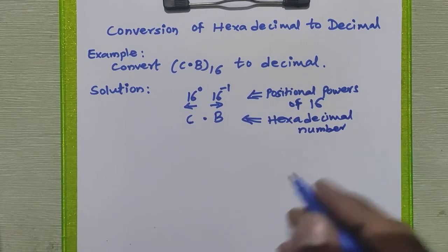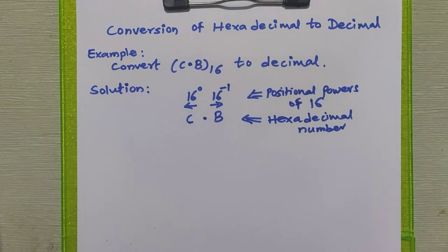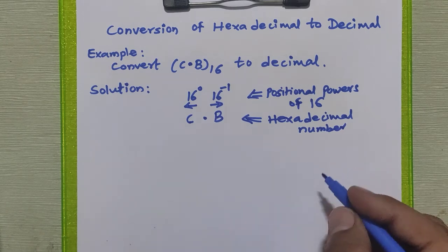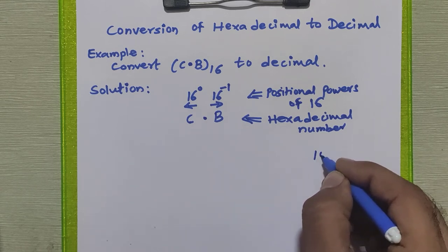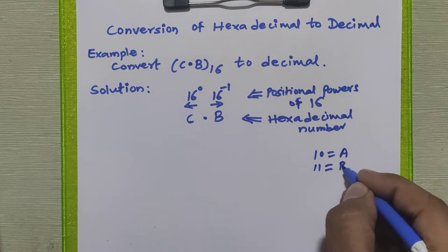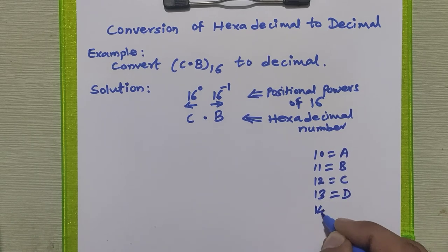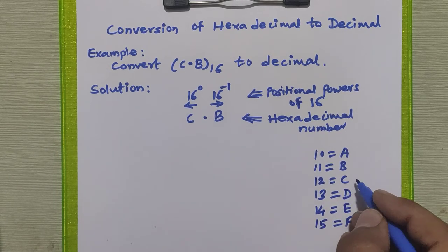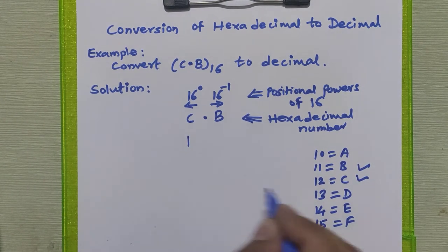Now, in the hexadecimal number system, C and B — as we know, there are 16 valid digits: 0 to 9, then 10 is represented by capital A, 11 by capital B, 12 by capital C, 13 by capital D, 14 by capital E, and 15 by capital F. So here, C is 12 and B is 11.